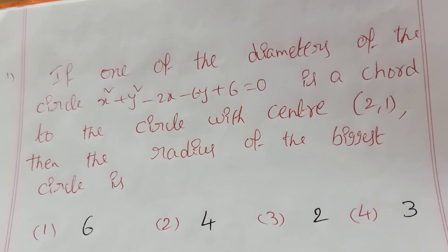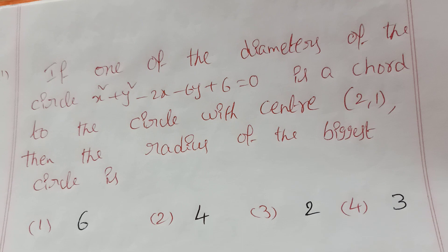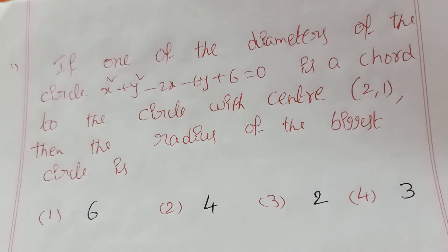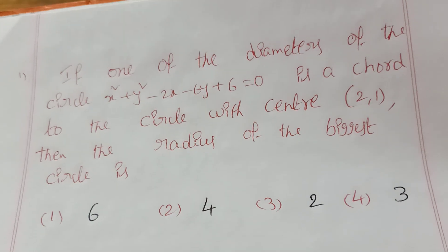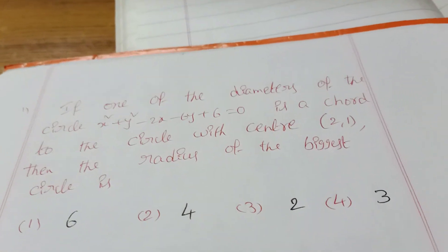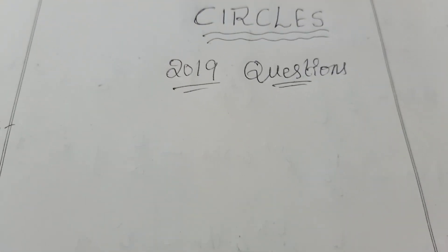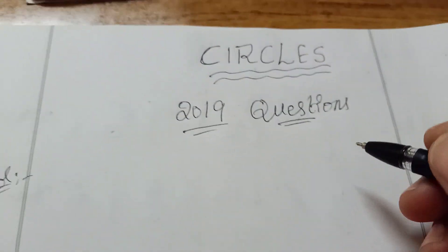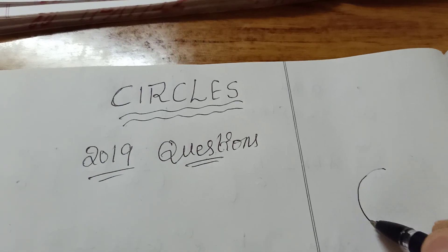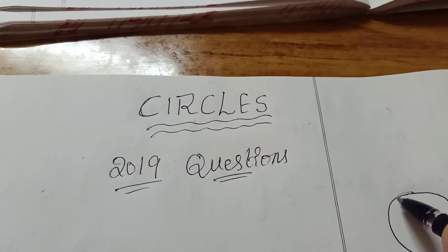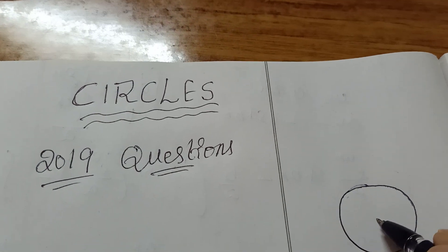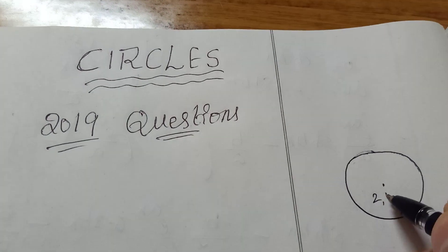One of the diameters of the given circle is a chord of the circle with center (2, 1). Let me draw this. I'm drawing the circle here. The center is given as (2, 1). This is a 2019 question.